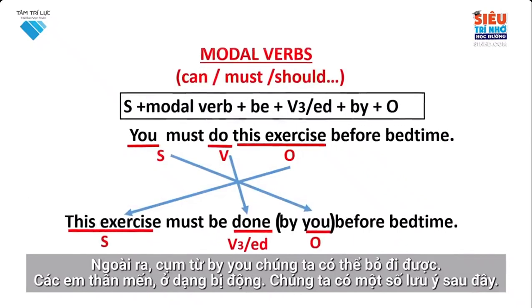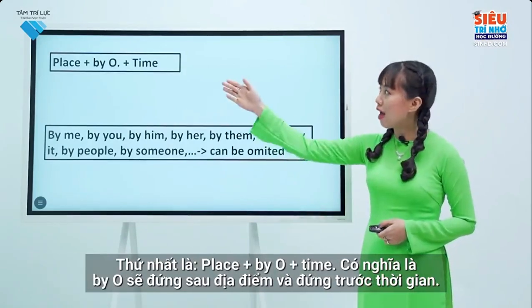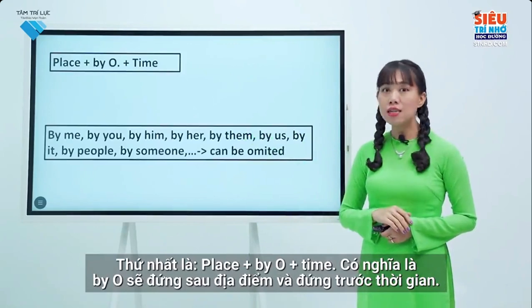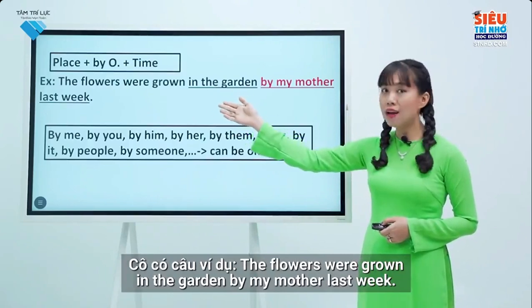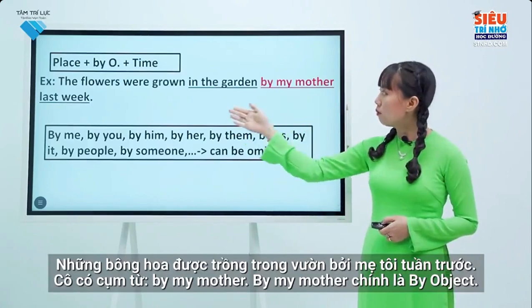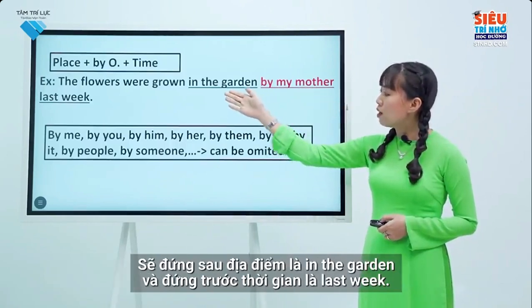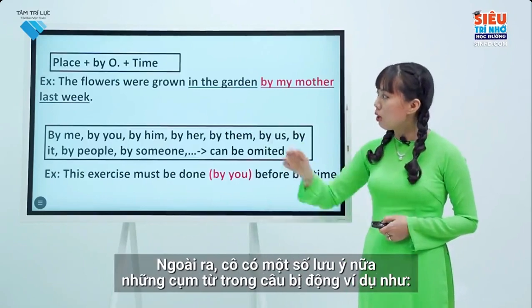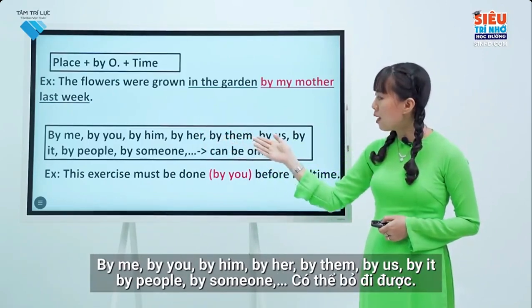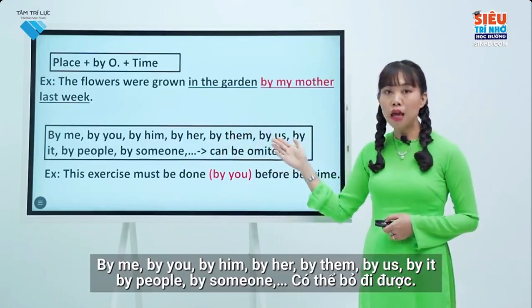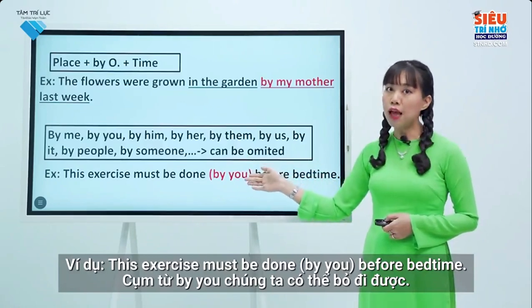My dear students, in the passive form I have some important notes. First: place + by object + time — meaning 'by object' stands behind the location and in front of the time. For example: 'The flowers were grown in the garden by my mother last week' — 'by my mother' stands behind 'in the garden' and before 'last week'. Second: the phrases by me, by you, by him, by her, by them, by us, by it, by people, by someone, etc. can be eliminated. For example, in 'This exercise must be done by you before bedtime', the phrase 'by you' can be eliminated.